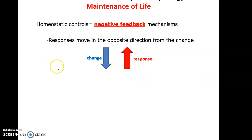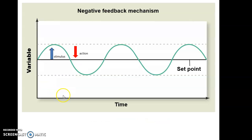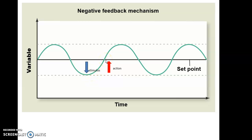Most of the time our homeostatic controls use negative feedback. Negative feedback means there is a change in one direction away from our set point, and the response works to return to the set point — reducing the amount of change from the set point. For example, with body temperature as the set point: if we get too hot, signals are sent out to lower body temperature; if body temperature gets too low, signals are sent out to return to the ideal temperature.